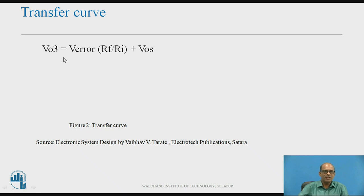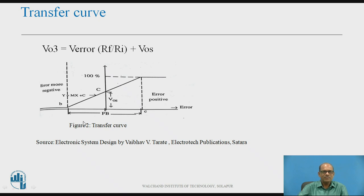The transfer curve for the equation V_O3 equals V_error times Rf over RI plus VOS, which is an equation of a straight line, can be drawn as follows. This figure shows the controller transfer curve, where the output is on the Y axis and the error (phi_SP minus phi_PV) is on the X axis. PV stands for proportional band. During the proportional band, the curve follows Y equals Mx plus C — a linear variation. When the error is maximum and the output reaches 100%, it remains constant, and on the other side it is 0. This is the transfer characteristic of the proportional controller.